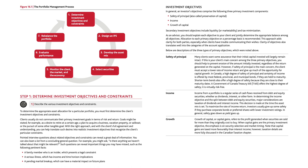In Canada, a high degree of safety of principle and certainty of income is offered by most federal, provincial, and municipal bonds if they are held to maturity. Shorter-term bonds also offer a high degree of safety because they are close to their maturity dates. A Government of Canada Treasury bill, or T-bill, offers the highest degree of safety — it is virtually risk-free.